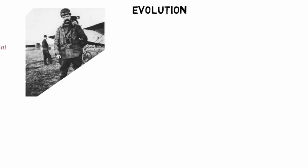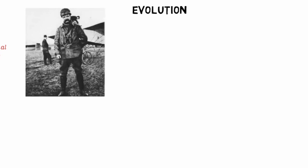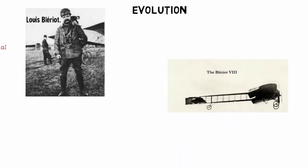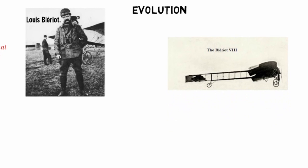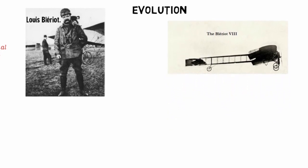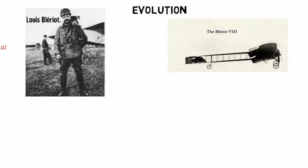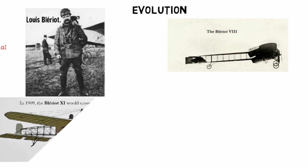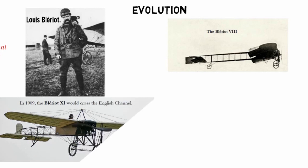Wilbur Wright's public demonstration in Europe impressed French aviation pioneer Louis Blériot. Within the same year, Blériot managed to create a working monoplane, the Blériot 8, and became the first to have a plane controlled through a hand-operated joystick and foot-operated rudder control. Later in 1909, the Blériot 11 crossed the English Channel.